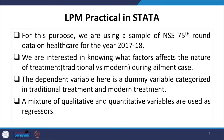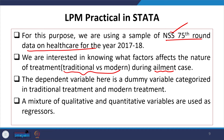For this purpose, we are using a sample of NSS 75th round data on healthcare. We are interested in knowing what factors affect the nature of treatment — traditional versus modern — during the case of ailment. If the ailing person is reporting access to some forms of medicines or non-medicinal treatment, those are categorized as traditional or modern. The dependent variable here is a dummy: yes or no. A mixture of qualitative and quantitative variables are used as the regressors.